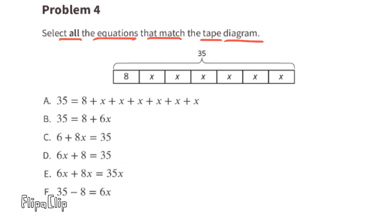Problem number 4: select all the equations that match the tape diagram. A: 35 equals 8 plus x six different times — yes, that matches the tape diagram perfectly. Within the total of 35, you have an 8 added to 6 different x's. B: 35 equals 8 plus 6 times x — again that's correct, because you have a total of 35 equaling 8 plus 6 times x.